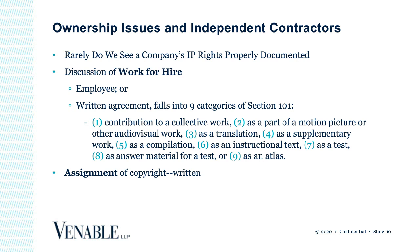Just calling something a work for hire in your agreement does not make it so — the nine types are pretty narrow, even shockingly narrow. So you always want to have alternative language in your agreements: if it is not actually deemed a work for hire, the independent contractor has assigned the copyright rights to you. You can also do that after the fact. An assignment also needs to be in a properly written, documented agreement assigning the ownership of those copyright rights to your company.